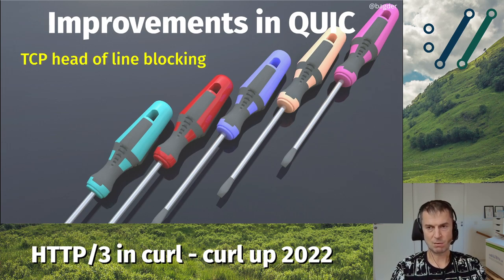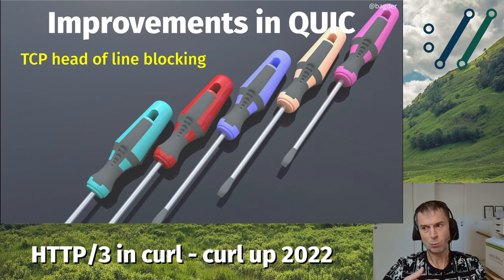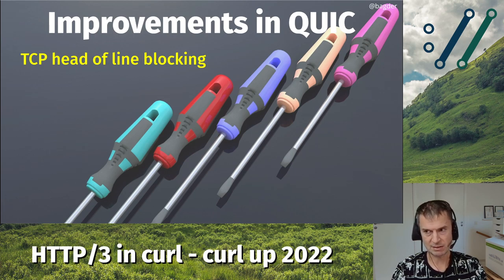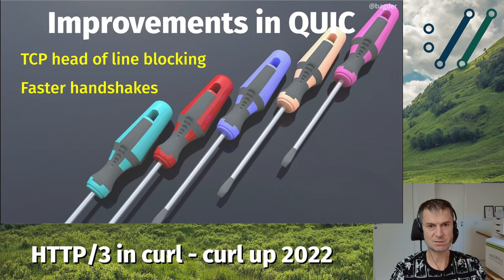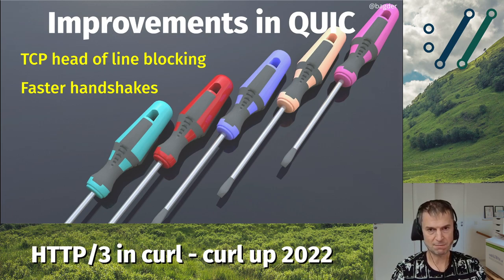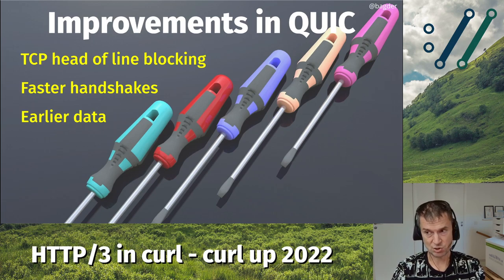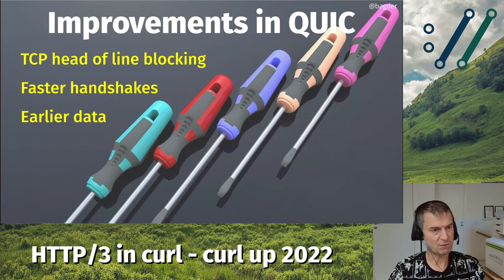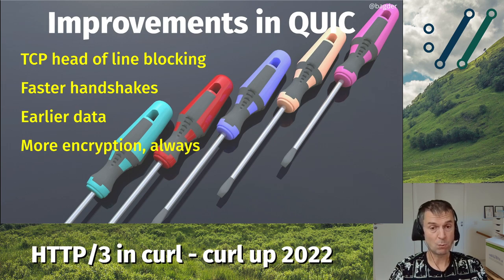Introducing QUIC fixes the TCP head-of-line blocking problem that was particularly bad in HTTP/2, where dropping a packet affects all streams on that TCP connection — potentially hundreds of streams. We also get faster handshakes with fewer round trips, and we can send data earlier in the handshake. With zero-RTT, if you've connected to a server before, you can start sending data immediately without losing time in round trips.